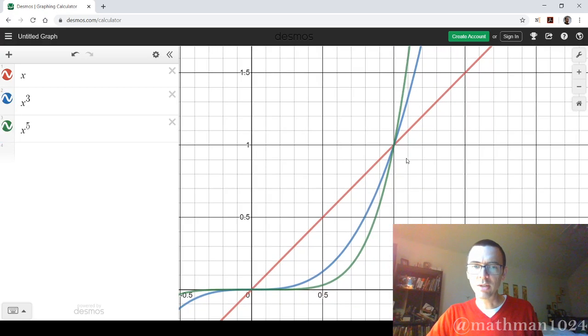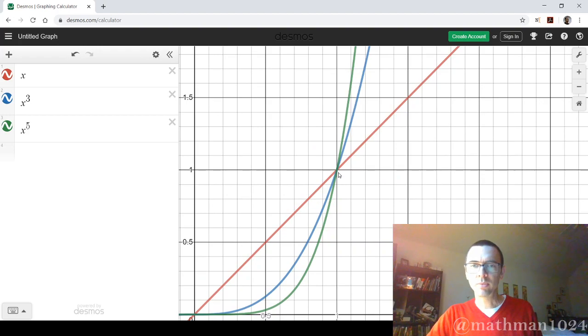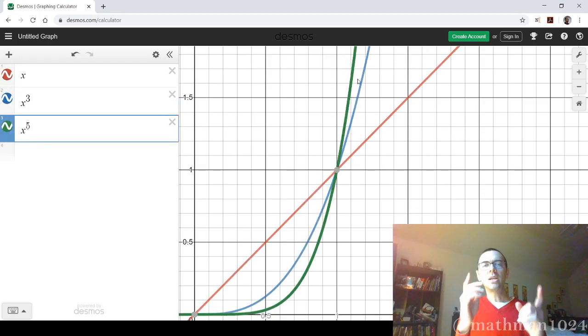But once I go beyond a value where x equals one, here's x to the first, x to the third, x to the fifth. So between negative one and one, the higher the power, the closer it is to zero.